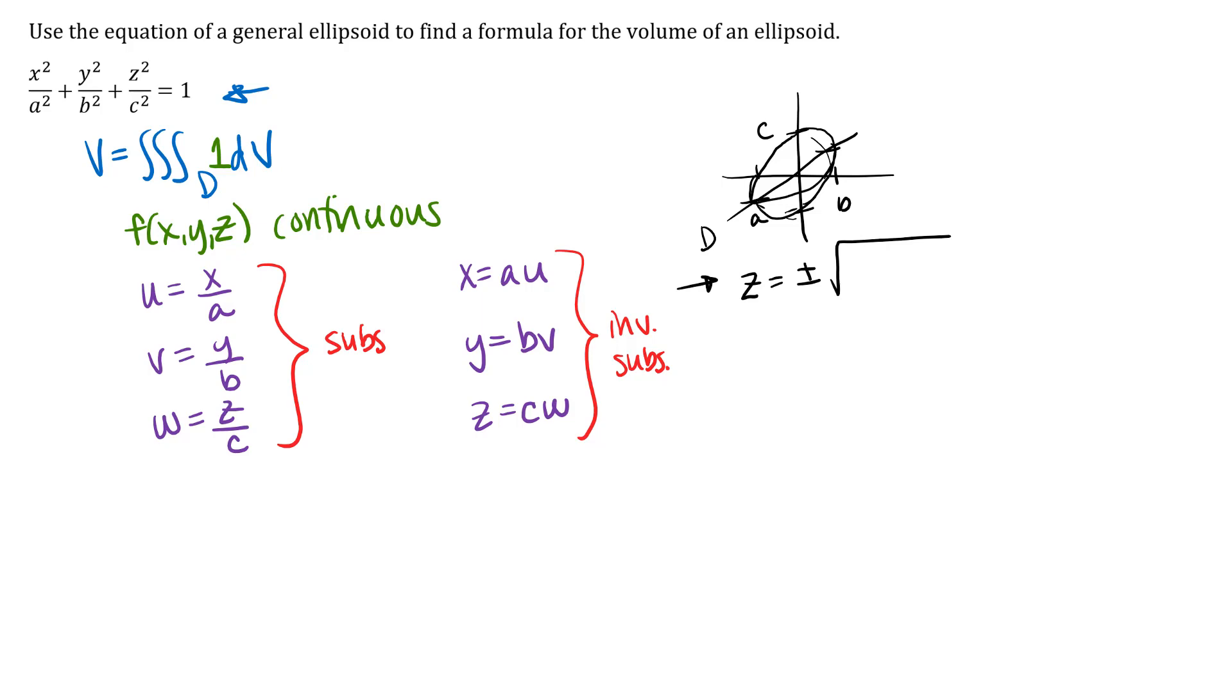And I'm just going to go up here to the equation of my surface and make my substitution, so in place of x over a I'll put u, in place of y over b I'll put v, and in place of z over c I'll put w. So we'll get our new equation u squared plus v squared plus w squared equals 1.